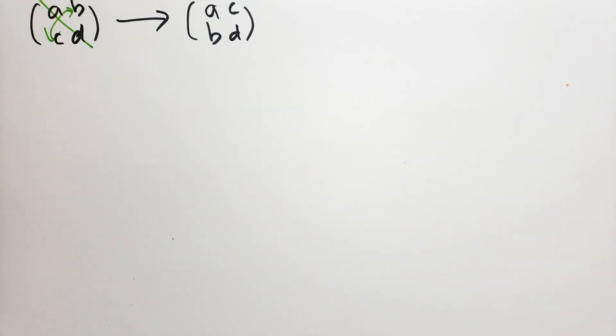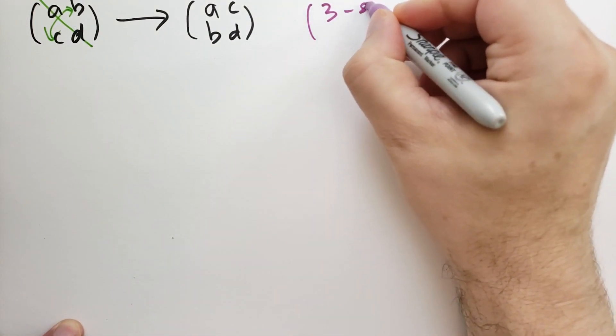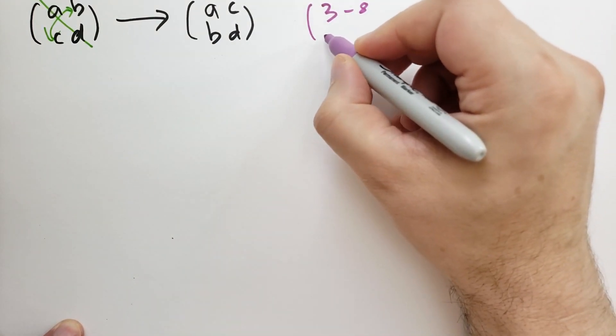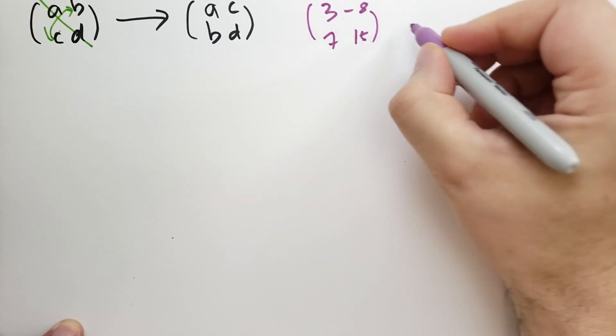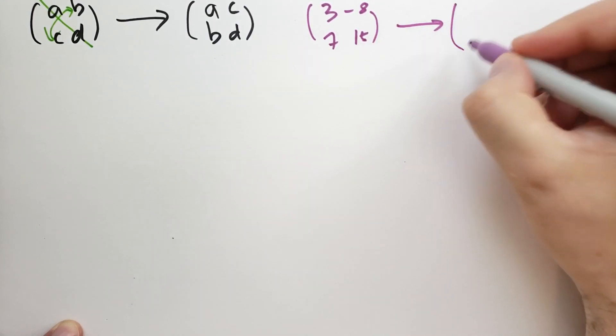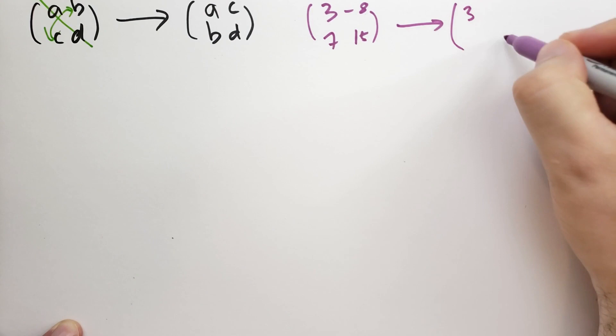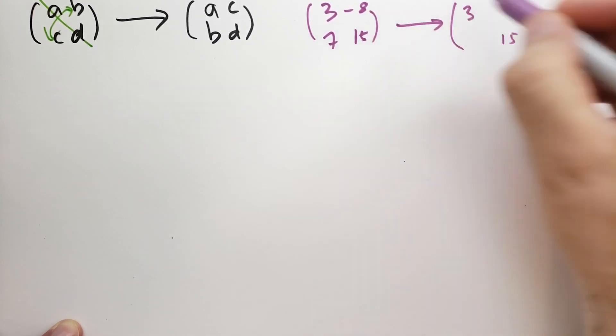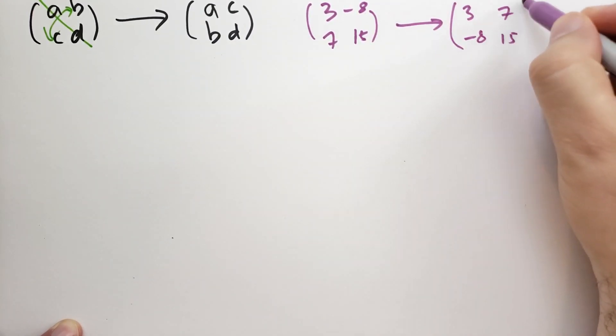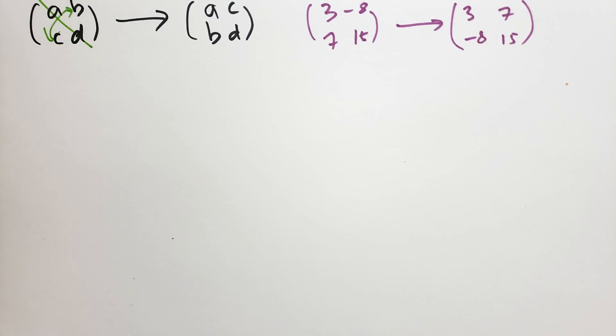A numeric example: we have 3, minus 8, and then 7 and 15. So if we transpose this, what does it become? We're going to keep the 3 and 15 in place, and we're going to switch 7 and minus 8. That's how that works.